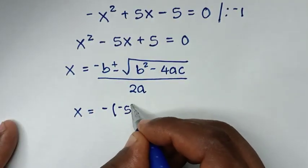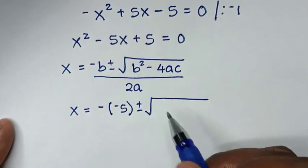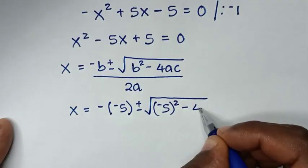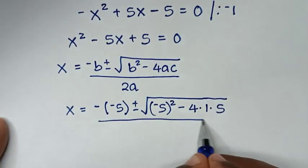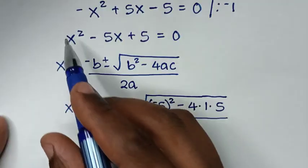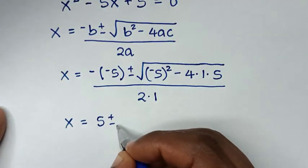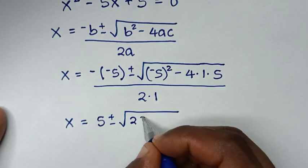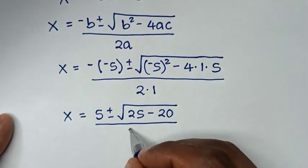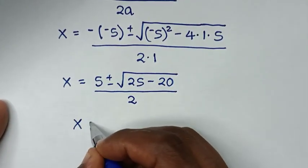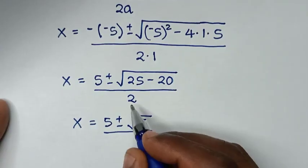Substituting a equals 1, b equals negative 5, and c equals 5, we get x equals negative (negative 5) plus or minus square root of (negative 5) squared minus 4 times 1 times 5, all over 2 times 1. That simplifies to x equals 5 plus or minus square root of 25 minus 20 over 2, which is x equals 5 plus or minus square root of 5, all over 2.